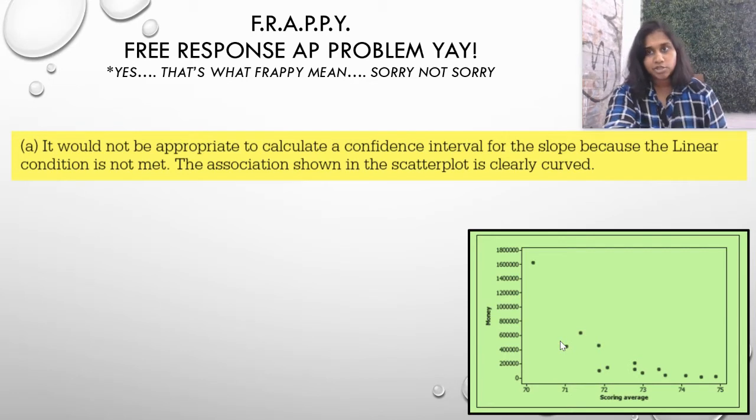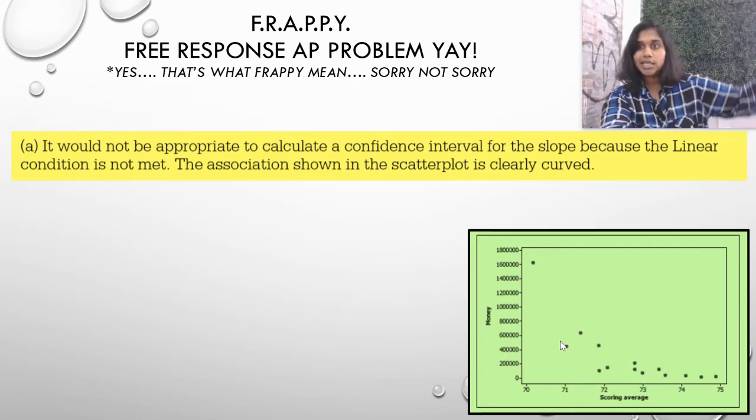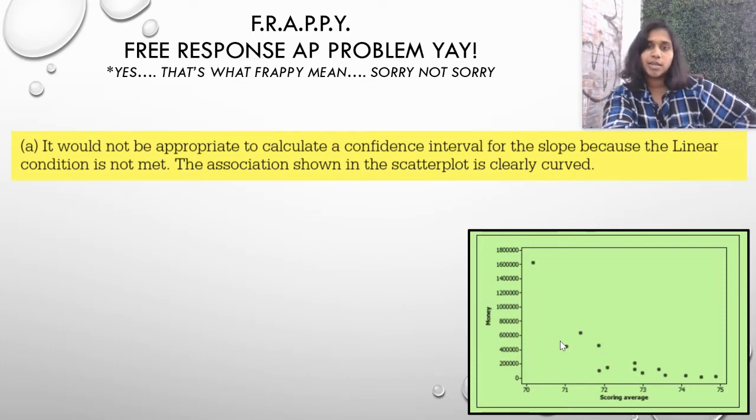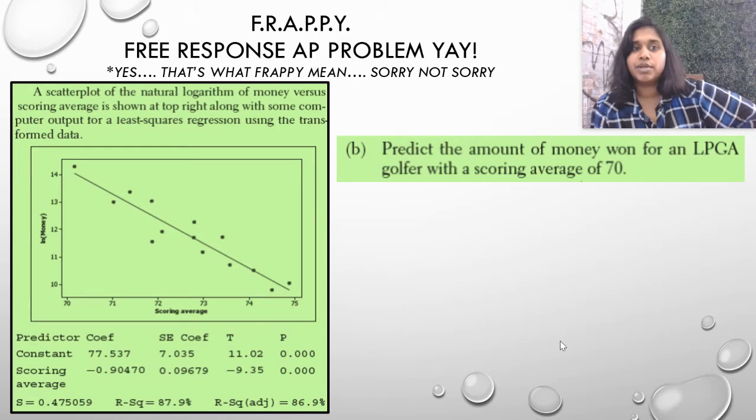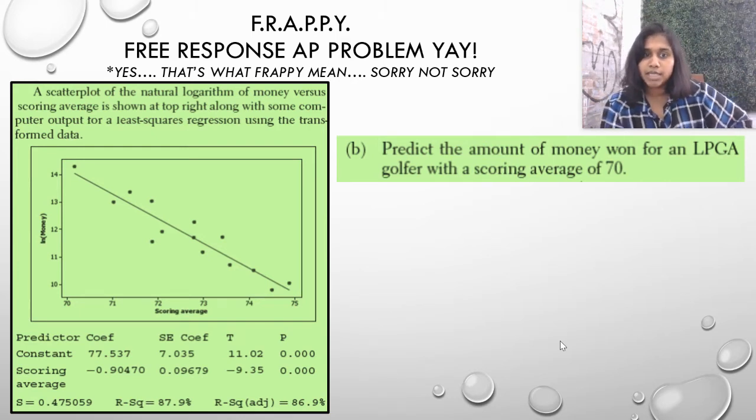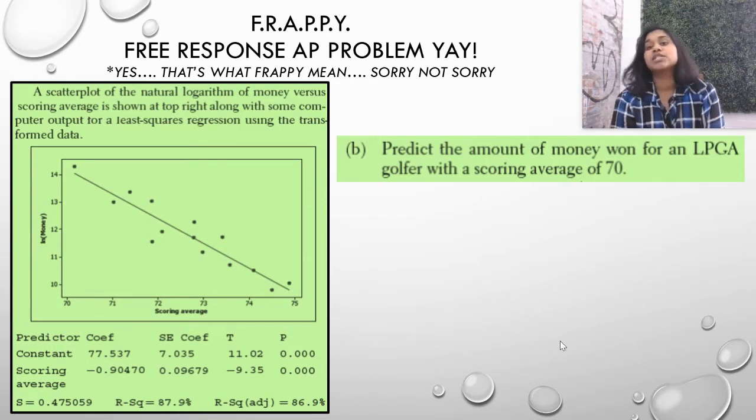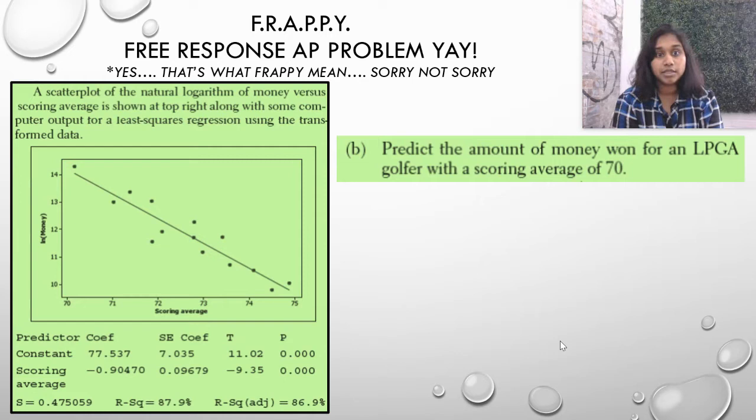That's the main reason it's not appropriate to use this. We know that because the whole point of this chapter was, what do we do with not appropriate scatterplots? We convert them. Let's go to question B. The scatterplot of the natural logarithm of money versus scoring average is shown. They took the natural log of the money. We transformed the information, and look what happened. It became a linear line.